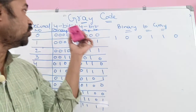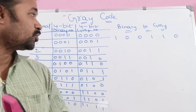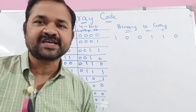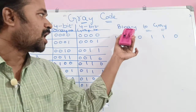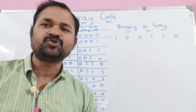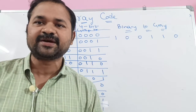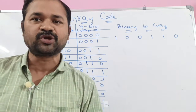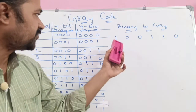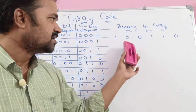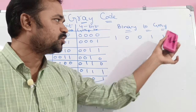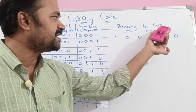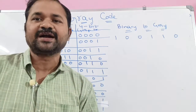Now let us discuss gray code. We are mainly going to discuss how to convert a binary number to gray code as well as gray code to binary code. So let me take a binary number like this: 100110. Now let us convert this binary number into the gray code.